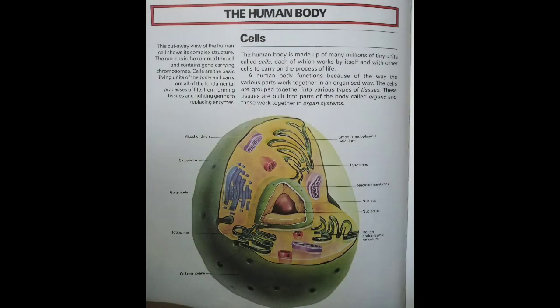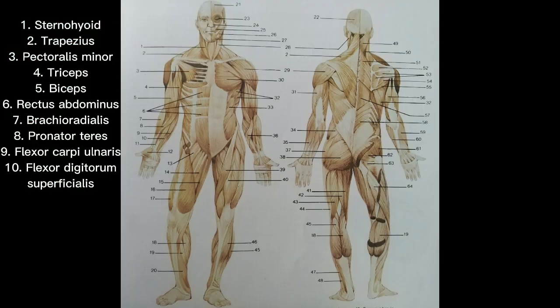The human body is made up of many millions of tiny units called cells, each of which works by itself and with other cells to carry on the process of life.